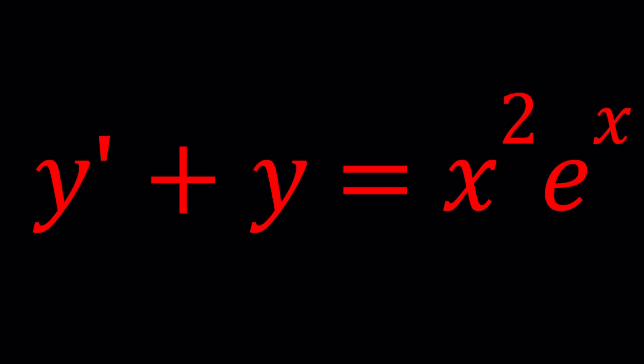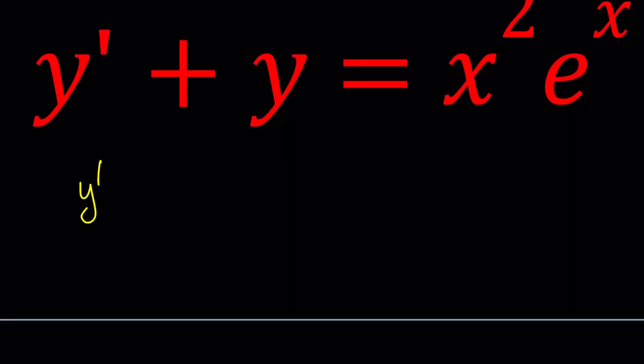This is a non-homogeneous equation because we have a non-zero function of x on the right-hand side. But to solve this problem, we're also going to consider solutions to the homogeneous case, where x²eˣ is replaced by 0. So we're going to start by solving the corresponding homogeneous equation, which is y' + y = 0. Why? Because that's how you find the general solution. You find the homogeneous solution, you find a particular solution, and then you add them up to get the general solution.